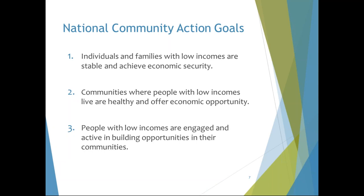The three national CSBG ROMA-NG goals are: individuals and families with low incomes are stable and achieve economic security; communities where people with low incomes live are healthy and offer economic opportunity; and people with low incomes are engaged and active in building opportunities in their communities. The National Association for State Community Services Programs, or NASCASPS, says that at the community level, ROMA-NG will allow CAAs to capture the scope or scale of the impact or intervention, will show movement on the larger community or population level changes, and will show progress over time and be easy to understand.